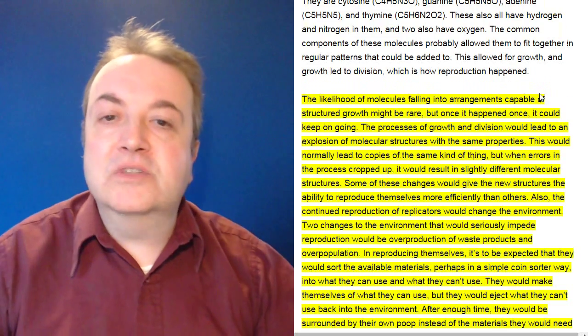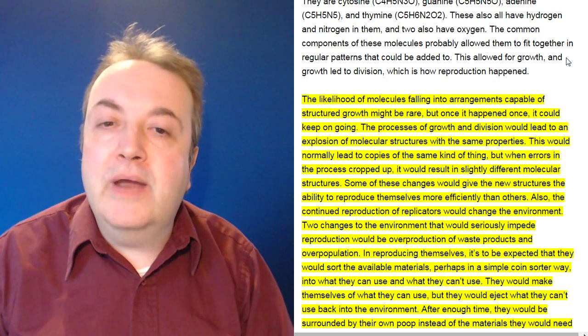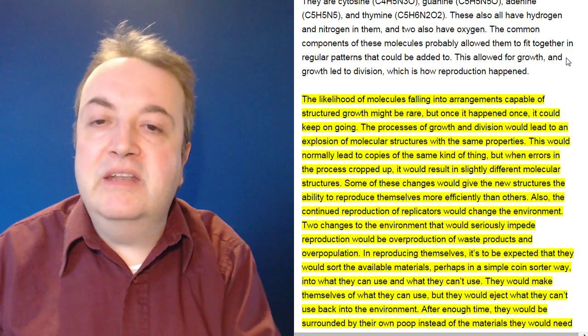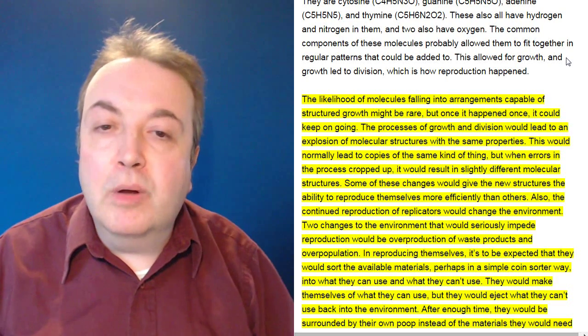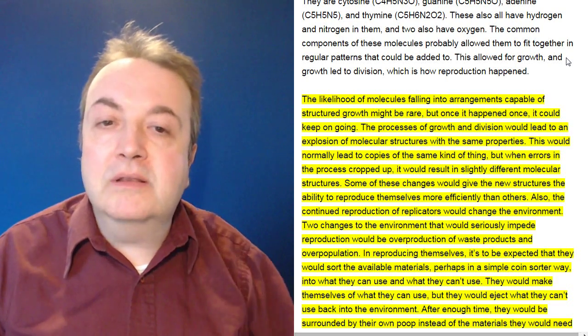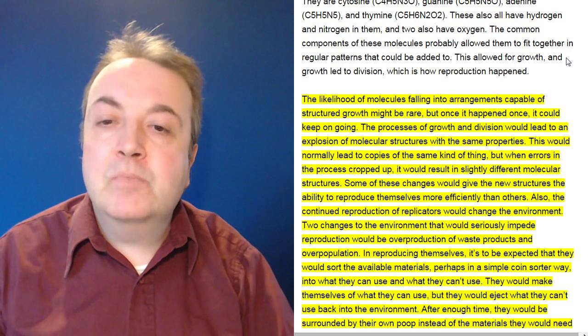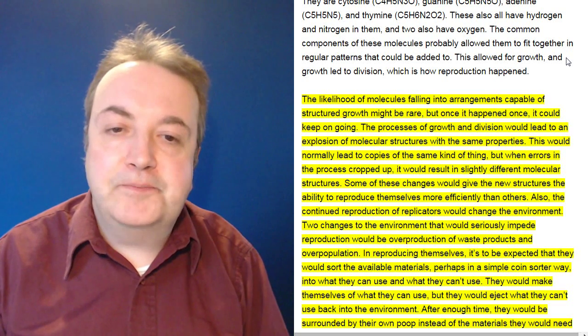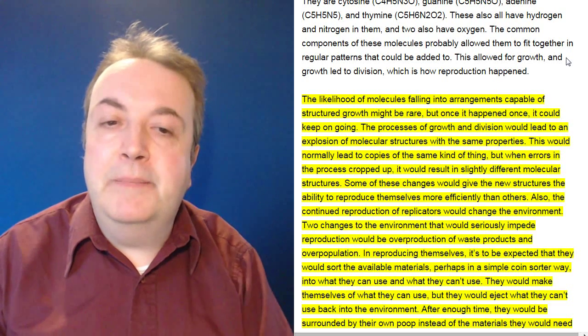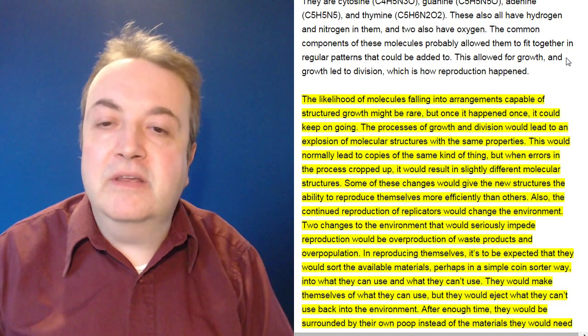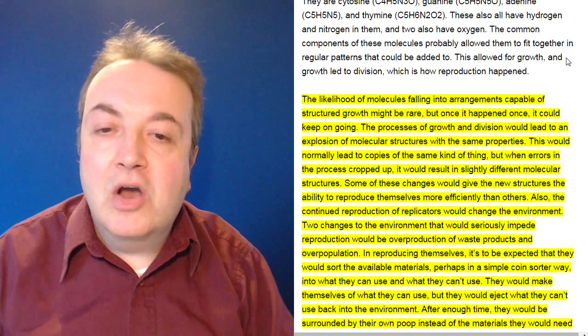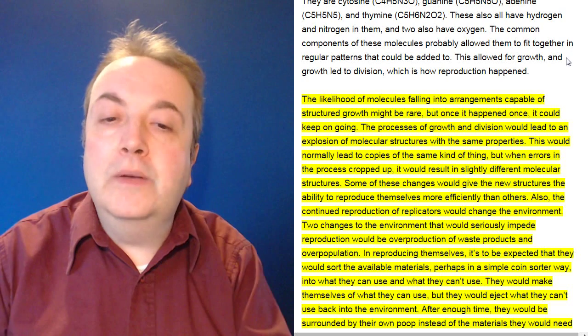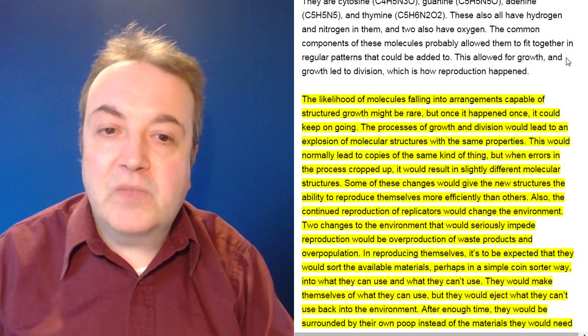The likelihood of molecules falling into arrangements capable of structured growth might be rare. But once it happened just once, it could keep on going. The processes of growth and division would lead to an explosion of molecular structures with the same properties. This would normally lead to copies of the same kind of thing. But when errors in the process cropped up, it would result in slightly different molecular structures. Some of these changes would give the new structures the ability to reproduce themselves more efficiently than others. Also, the continued reproduction of replicators would change the environment.